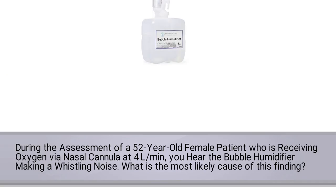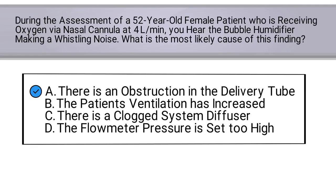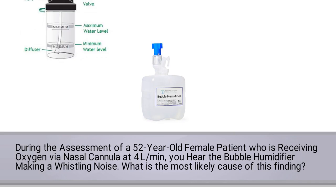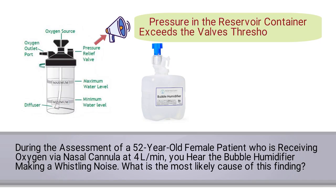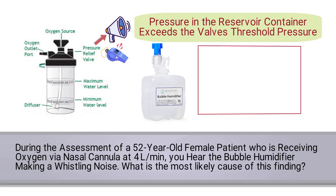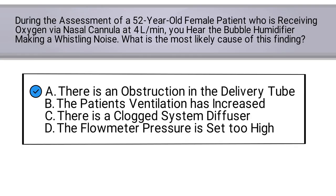If you've ever accidentally stepped on the tubing of a bubble humidifier while it's being used, you will automatically recognize that the correct answer is A. The relief valve of a bubble humidifier was designed to sound whenever the pressure in the reservoir container exceeds the valve's threshold pressure, resulting in a loud whistling noise. The most common reason for this to occur is when there is a downstream obstruction to outflow. This one was short and sweet because there is clearly only one possible correct answer, and it's A: there is an obstruction in the delivery tube.